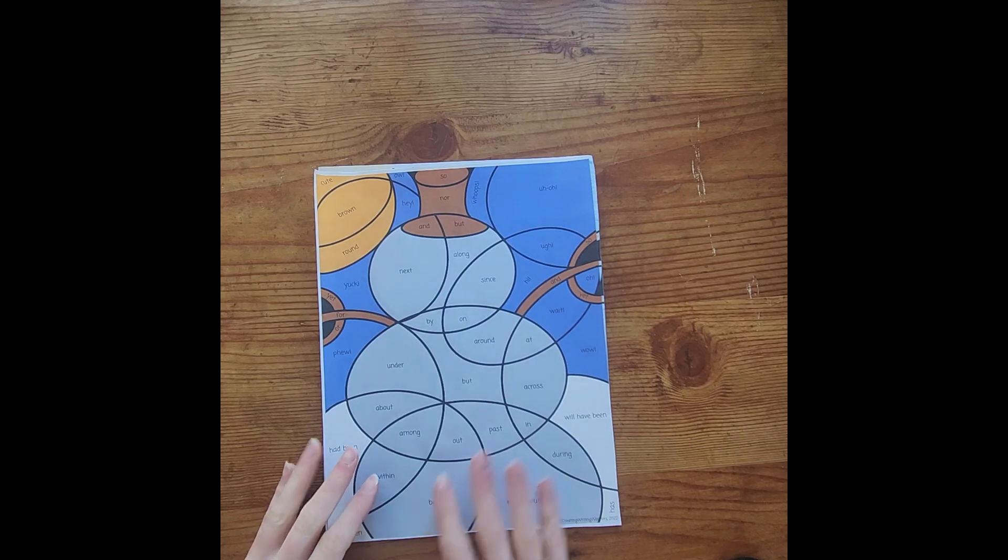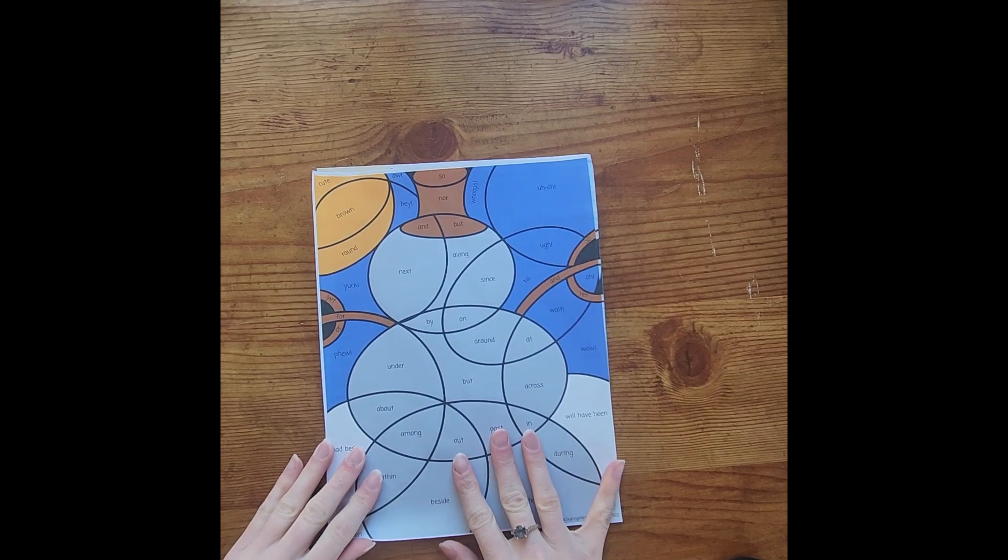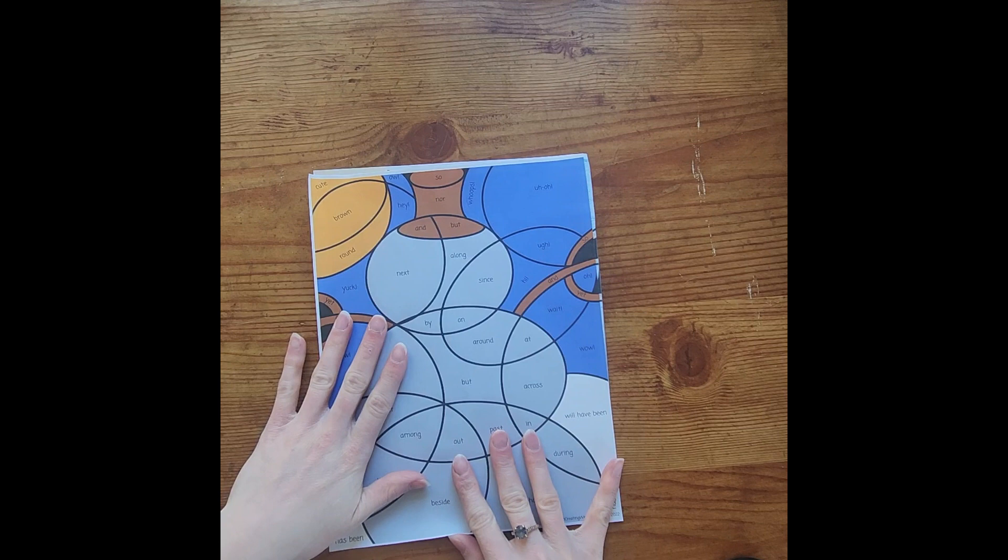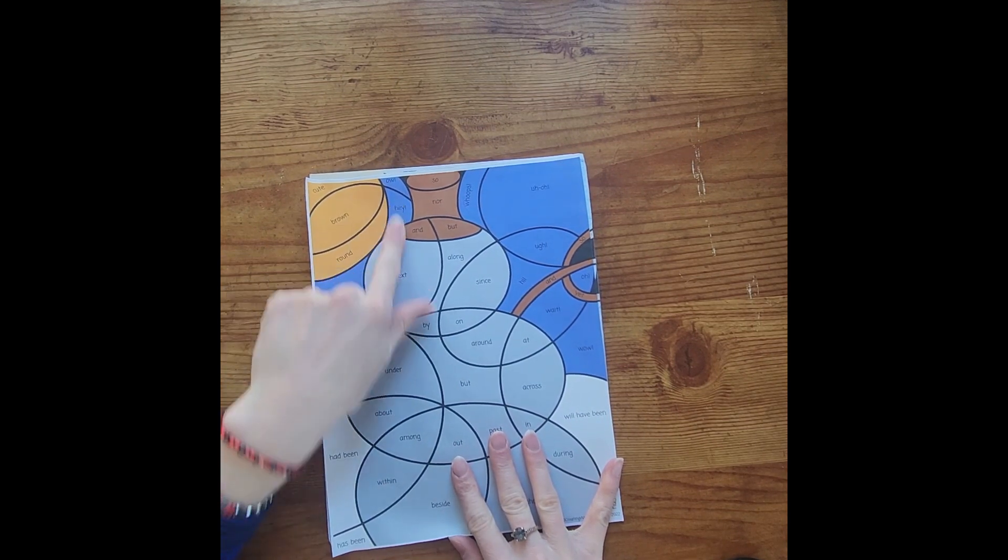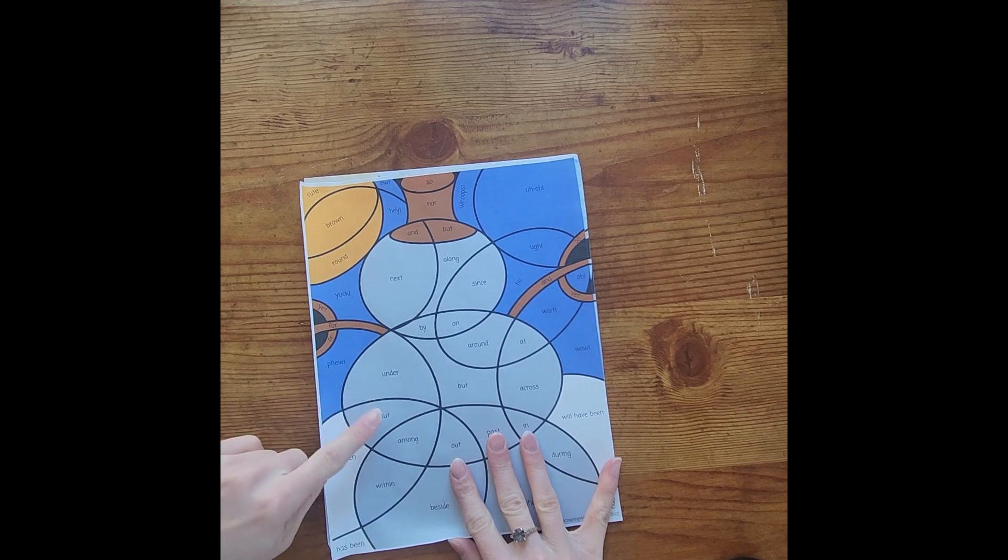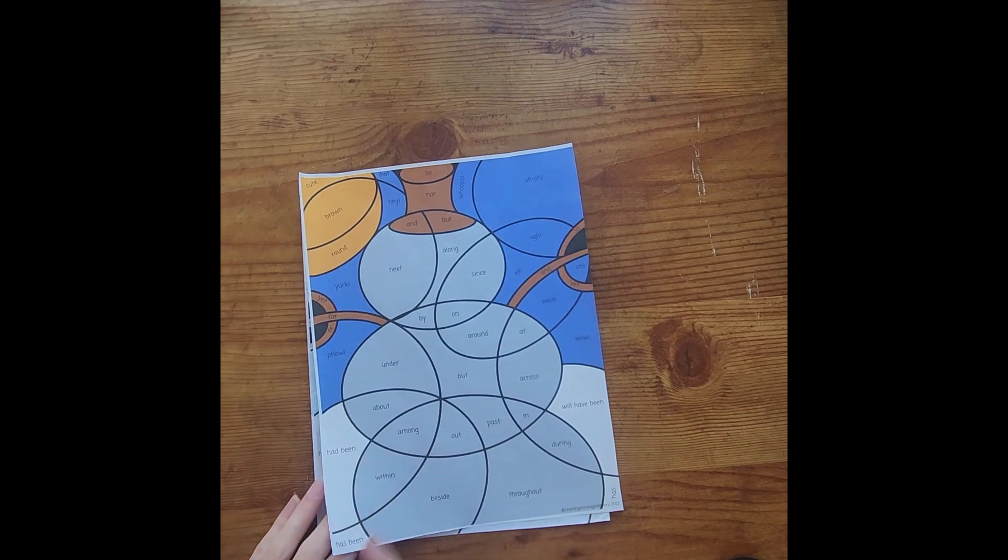This is what they will see. This is what you will see, I'm sorry, as an answer key. It will look pretty much just like that, except it has the actual adjectives and interjections and verb tenses. So that's your answer key that you'll see.